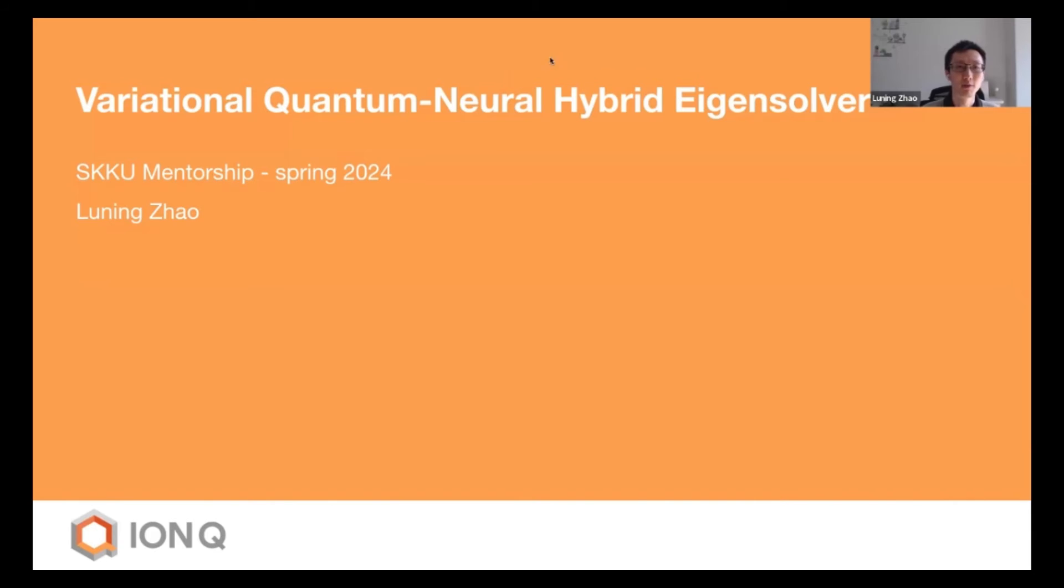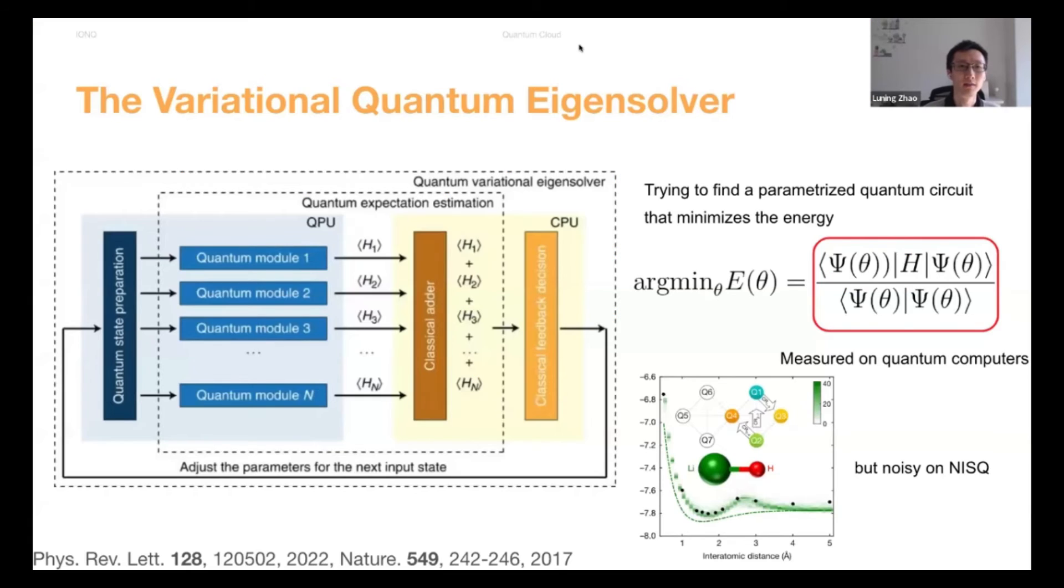Here today, I'm going to propose this idea of a variational quantum neural hybrid eigensolver. And here is the overview of the variational quantum eigensolver, which you find here, a workflow for VQE. The goal of VQE is trying to find a parametrized quantum circuit that minimizes this energy in which you have a quantum circuit wave function ψ and θ will be the parameters of these of the quantum circuit. By minimizing this energy functional, you will be able to find the approximation to the ground state of this particular Hamiltonian.